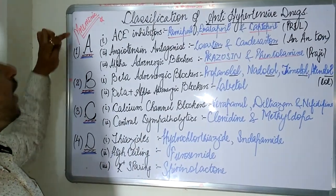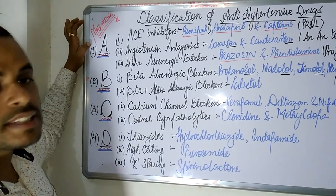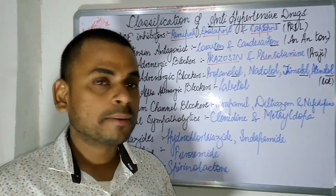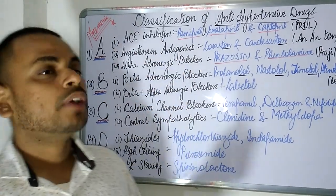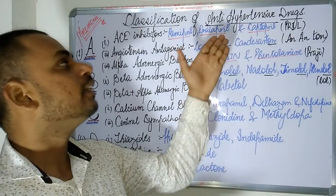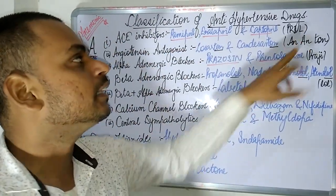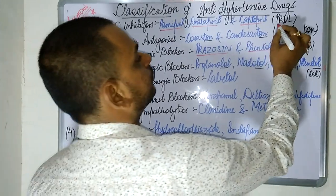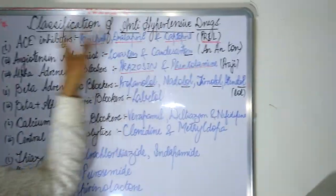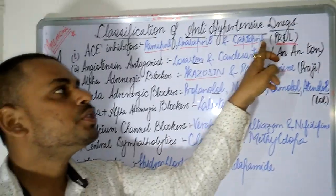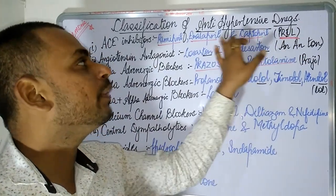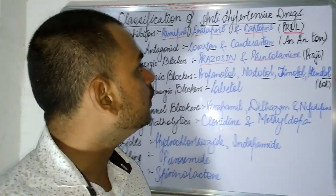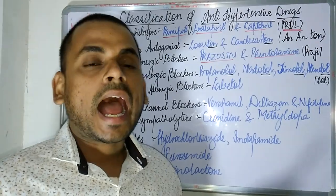Beginning with the first letter: the mnemonic is A, B, C, and D. The first A corresponds to the ACE inhibitors. If students are forgetting what drugs are included in the ACE inhibitors, just remember the code word PRIL. All medicines belonging to the ACE inhibitors will end with the suffix PRIL — P, R, I, L. Common examples include Ramipril, Enalapril, and Captopril.